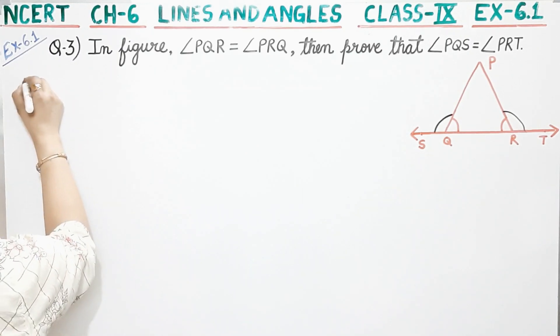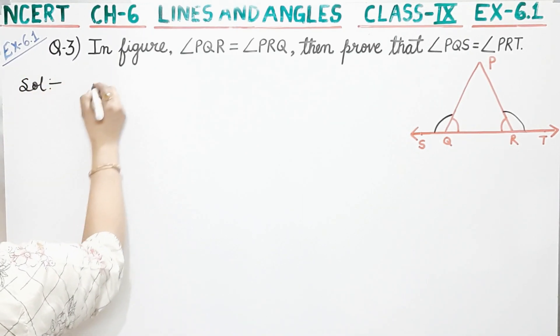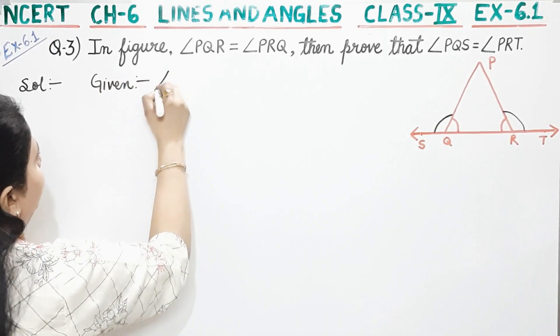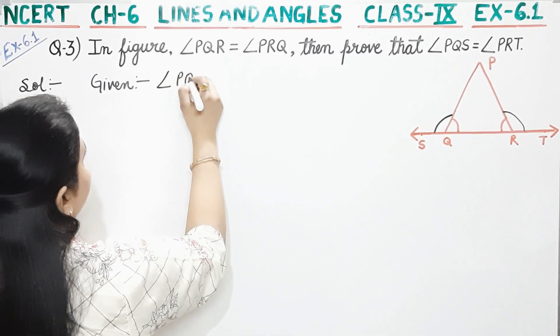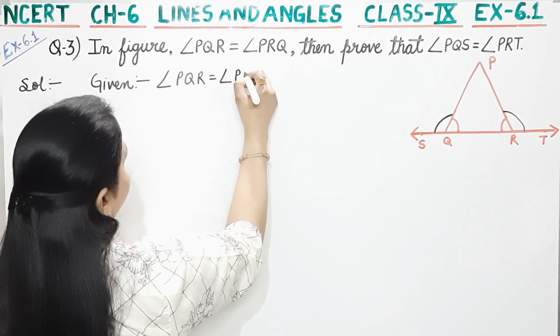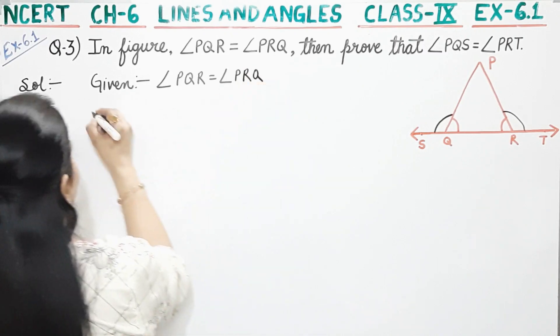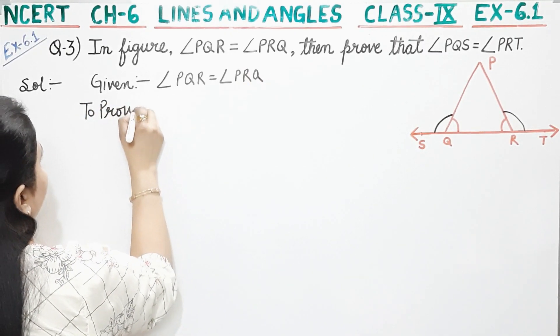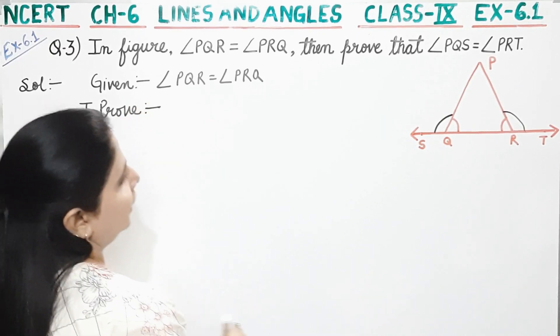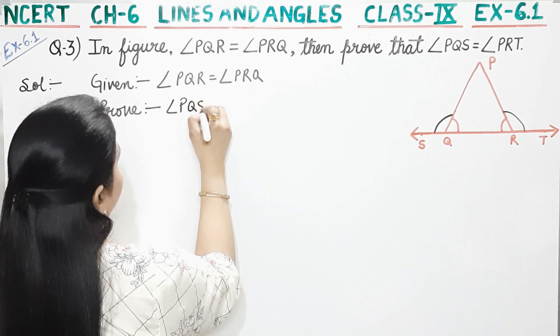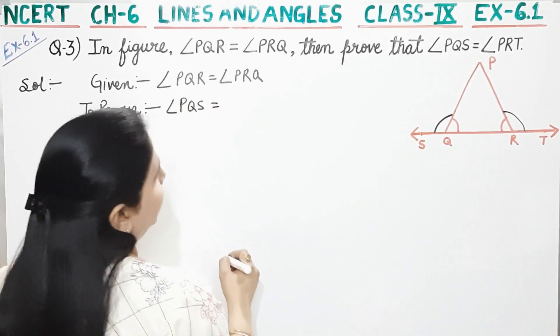So this is what you have been given. Given: angle PQR is equal to angle PRQ. To prove: we have to prove that angle PQS is equal to angle PRT.